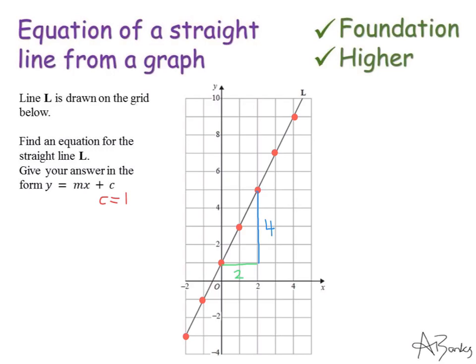So to calculate the gradient of this line I need to do the height of this triangle which is 4 divided by the width of the triangle which is 2. Some teachers might call this the rise divided by the run. Whatever helps you remember it, we do the height divided by the width. So the value of m, my gradient, is 4 divided by 2 which is 2.